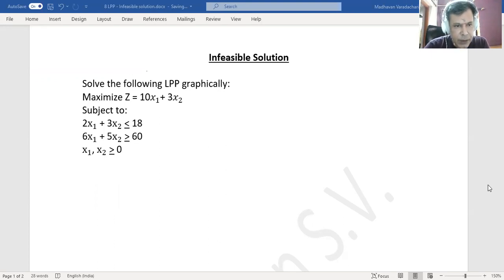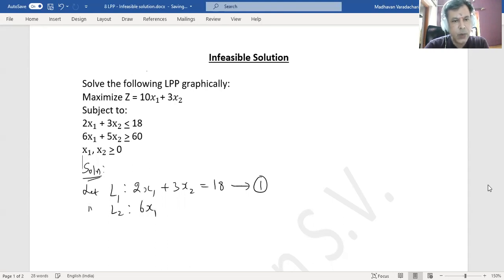We'll start by first converting these inequations to equations. Let line 1 be 2 times x1 plus 3 times x2 equal to 18. We'll consider this as equation 1. Let line 2 be 6 times x1 plus 5 times x2 equal to 60. Call this as equation 2.